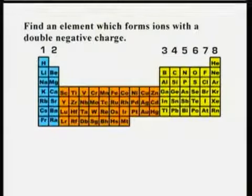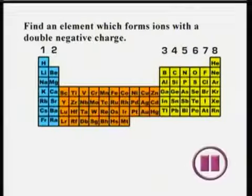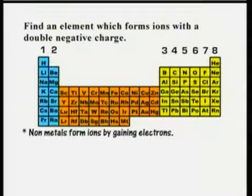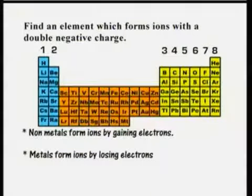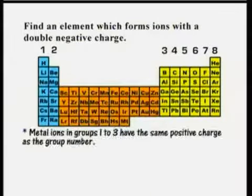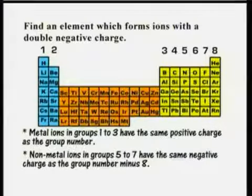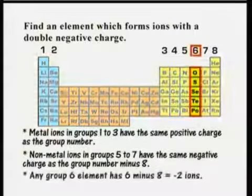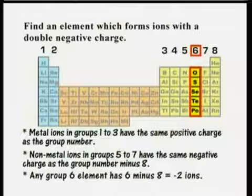Find an element that forms ions with a double negative charge. Non-metals form ions by gaining electrons. Metals form ions by losing electrons. Metal ions in groups 1 to 3 have the same positive charge as their group number. Non-metal ions in groups 5 to 7 have the same negative charge as their group number minus eight. Therefore, any group 6 element has six minus eight, that's negative two ions.